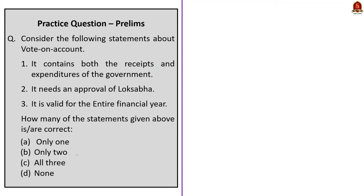The next question is about the Vote on Account. Three statements are given. The first statement is incorrect because the Vote on Account contains only the expenditure of the government. The second statement says it needs approval of Lok Sabha — this is incorrect; it does not require Lok Sabha approval. The third statement says it is valid for the entire financial year — this is also incorrect; it is valid for two months until the full budget is passed. The correct answer is option D, none of the above, because all statements regarding Vote on Account are incorrect.